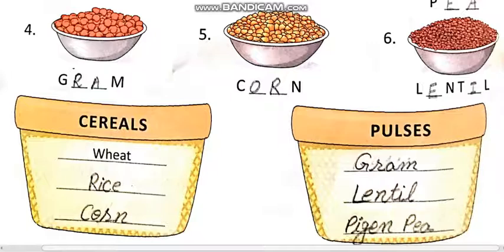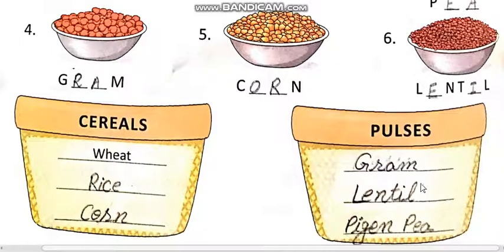Number 6: Lentil. Now placing in the baskets — Cereals: Wheat, Rice, Corn. Pulses: Gram, Lentil, Pigeon Pea.